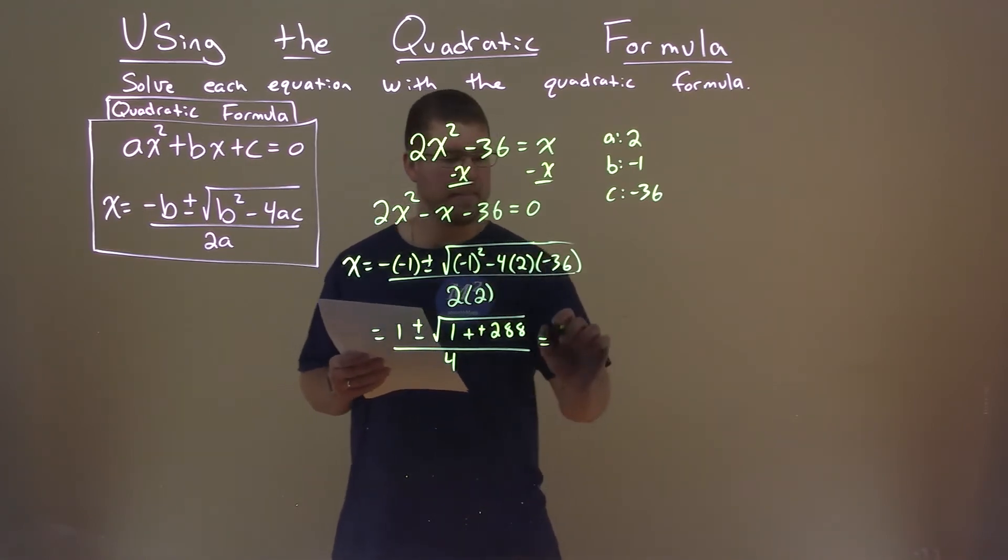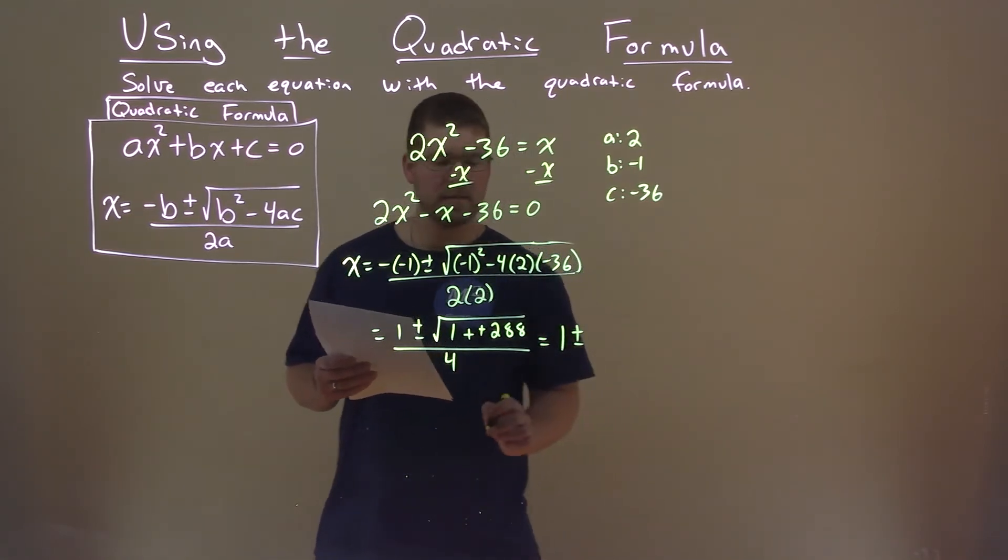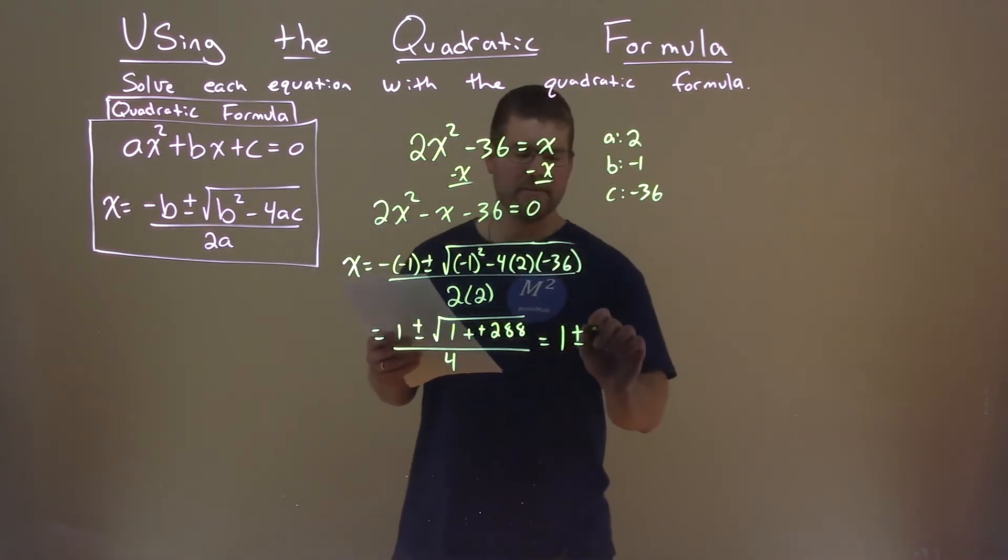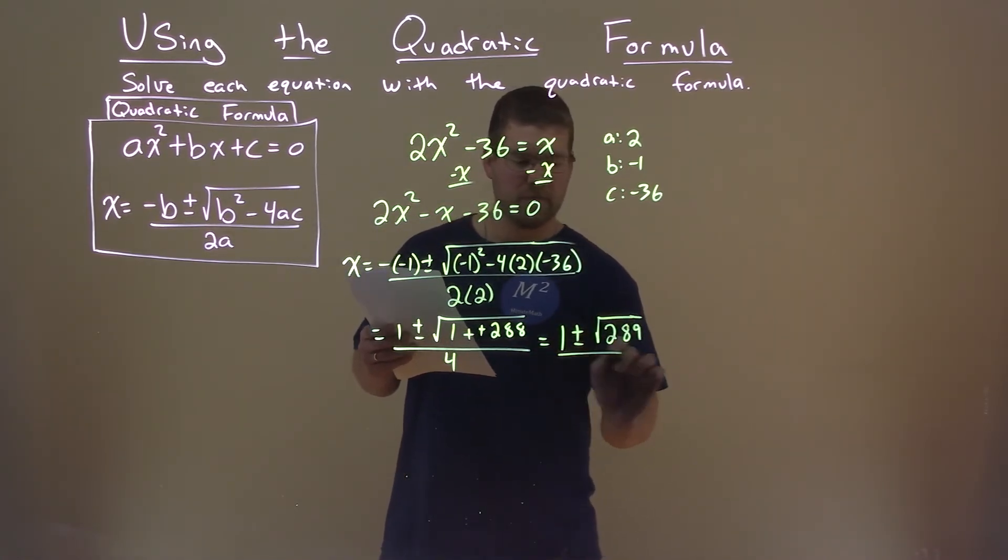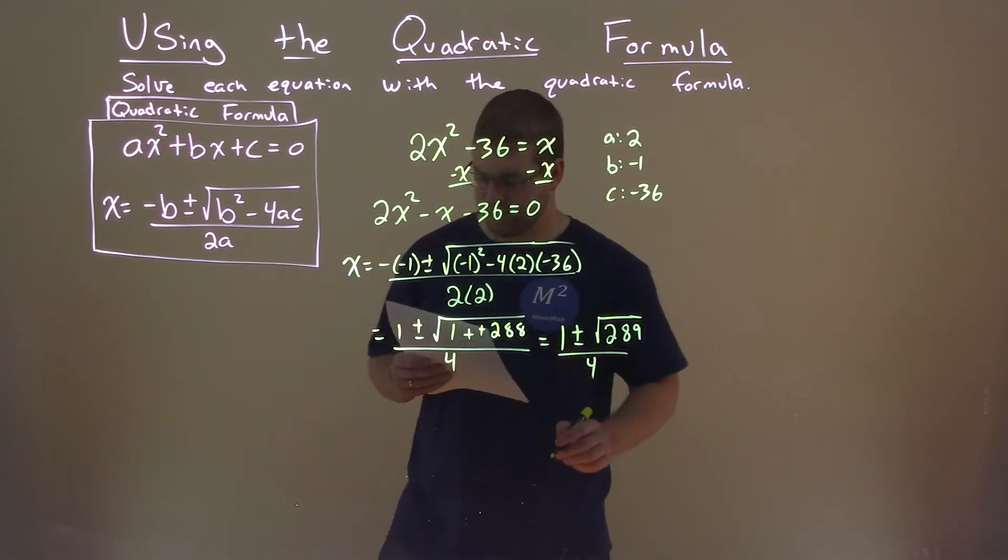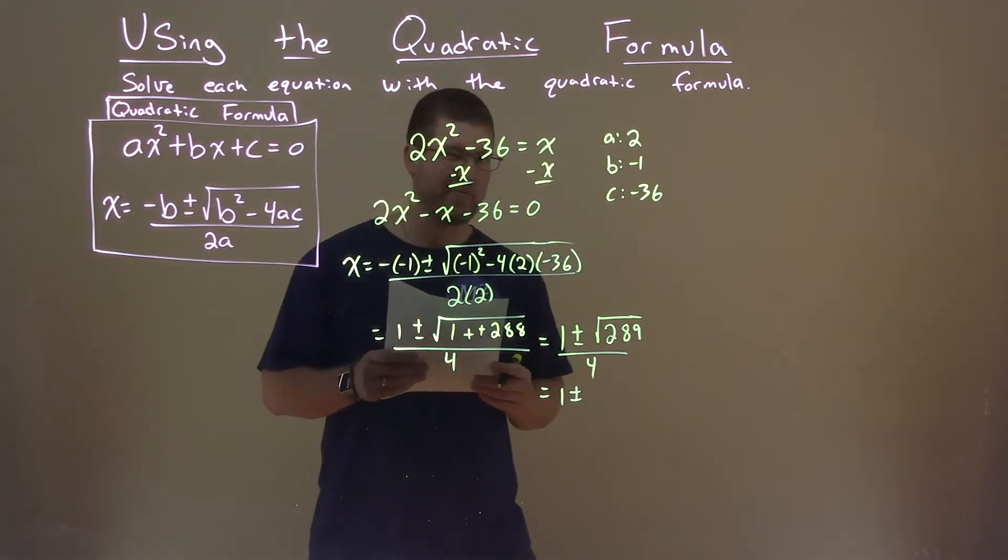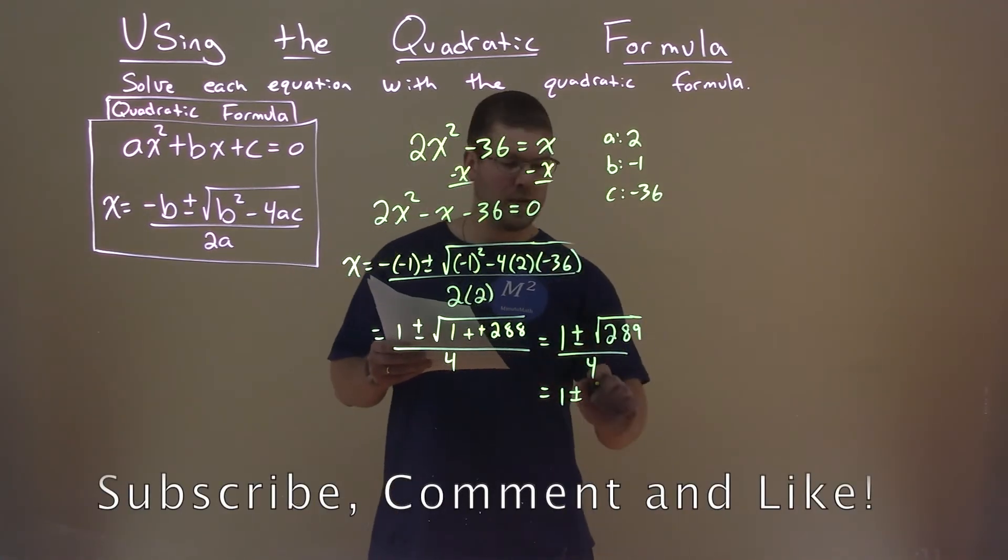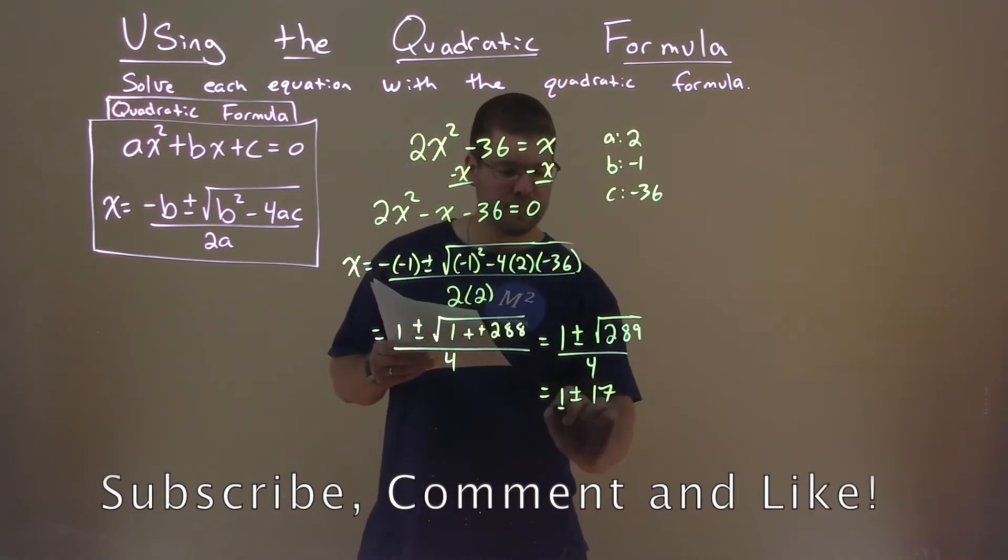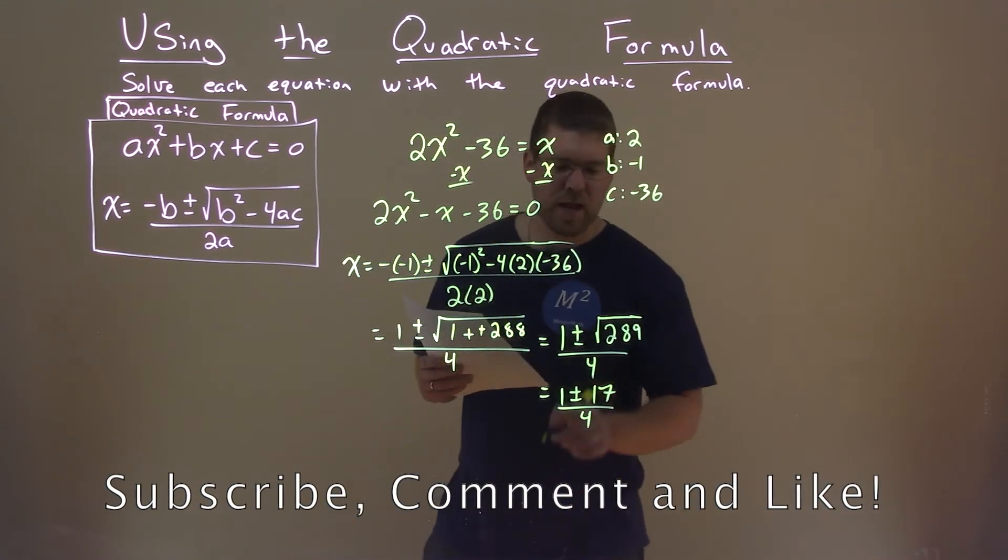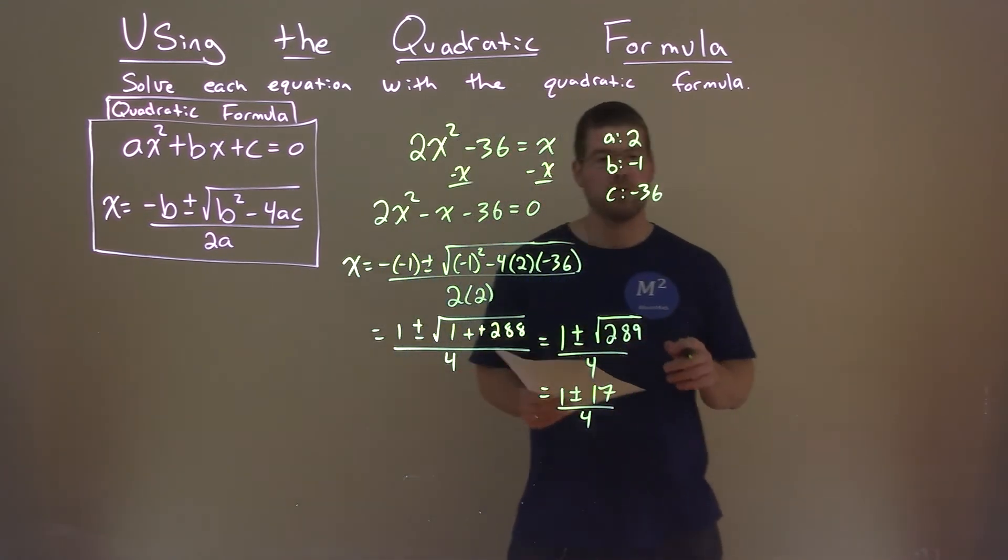Let's simplify that. One plus or minus here, one plus 288 is 289, over four. So square root of 289, if you know that off the top of your head, great for you. For me, I don't. But square root of 289 is 17 over four.